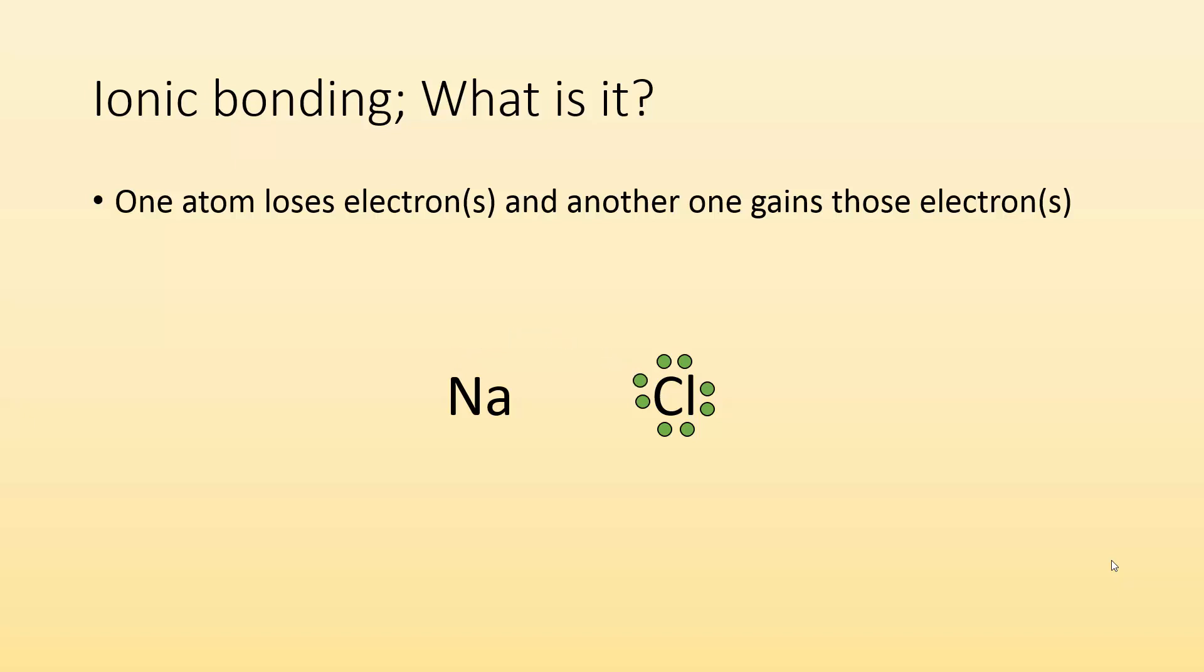So sodium was neutral, but it just got rid of a negative electron. So what happens to its charge? Well, sodium becomes positive because it got rid of a negative electron. Well, what's that mean for chlorine? It gained a negative electron. So what's going to happen to its charge? Well, that's going to become negative.